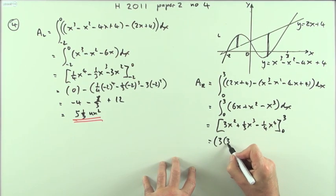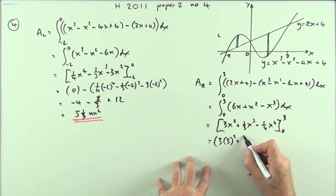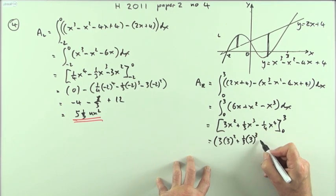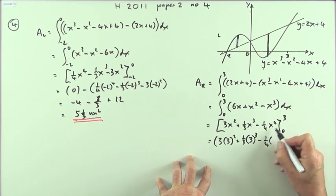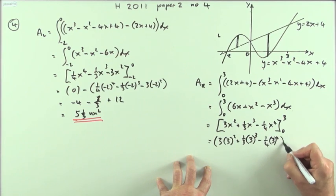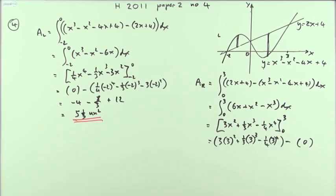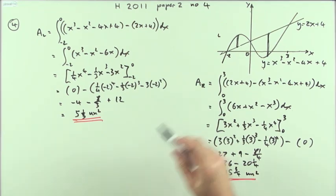So it'll be three times three squared - that's nice - plus a third of three cubed, that's still fine, minus a quarter of three to the power four, that's not so nice, and then just minus zero because they're all x terms. That'll be 9, 27, a third of that is 9, plus 9, minus 81/4. So it's 36 take away 20 and a quarter, which will be 15 and 3/4 for the right-hand area.